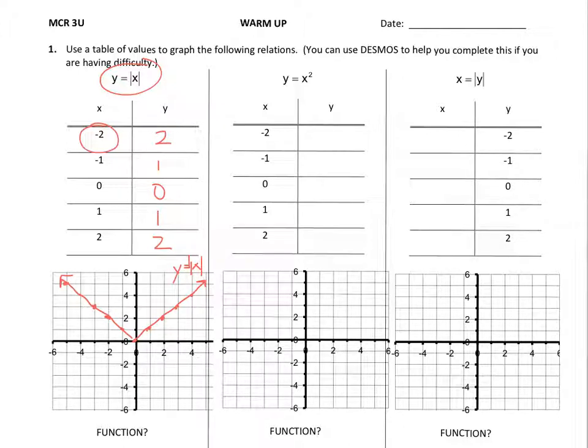Now, if I look at this in terms of function versus just being a relationship, this does pass the vertical line test. For every value of x, I only ever get one matching value of y. So this definitely is a function.